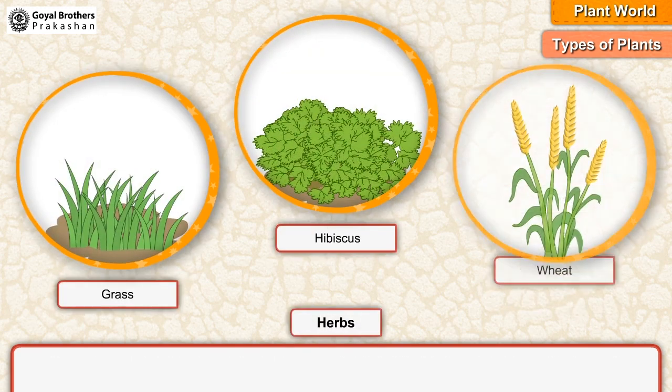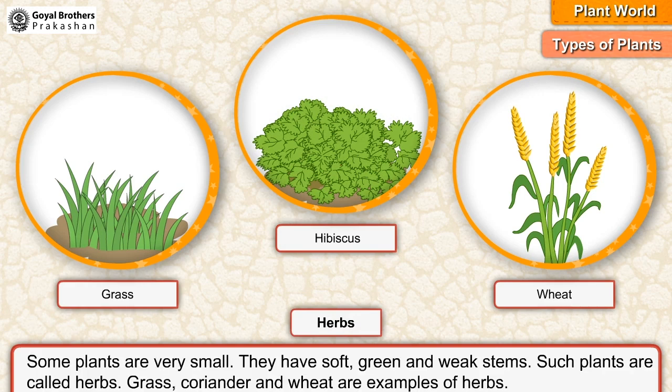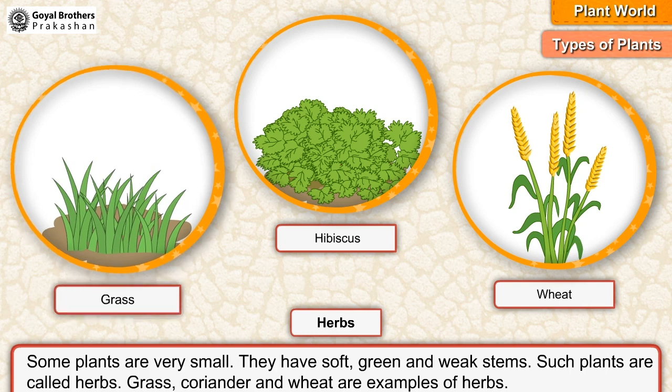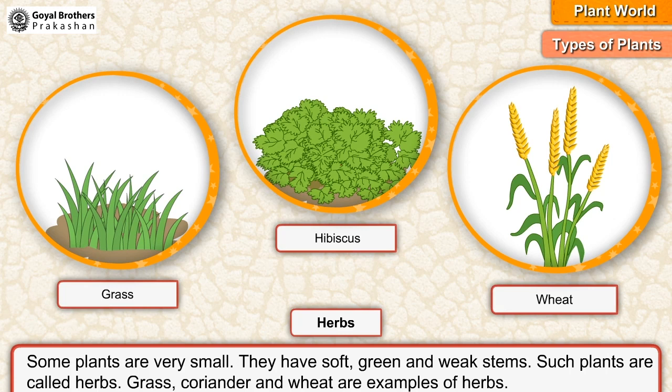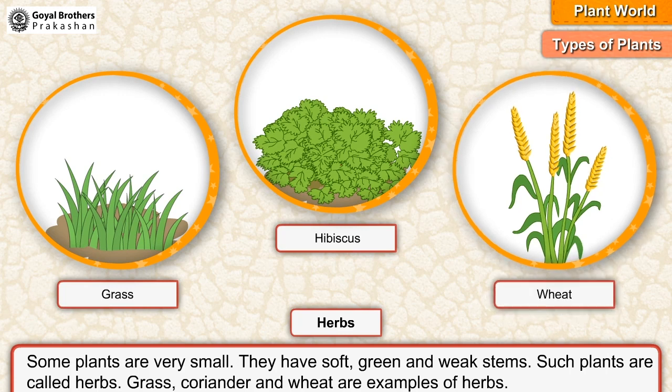Herbs: some plants are very small. They have soft, green and weak stems. Such plants are called herbs. Grass, coriander and wheat are examples of herbs.